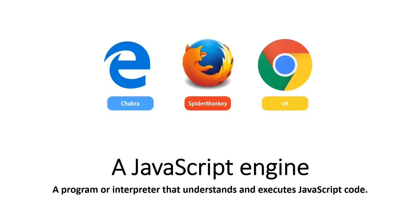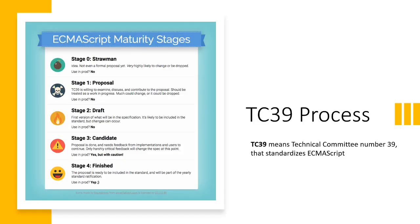A JavaScript engine is a program or interpreter that understands and executes JavaScript code. Whenever a new recommendation comes in ECMAScript to add a new feature, it should go through a process called the TC39 process.